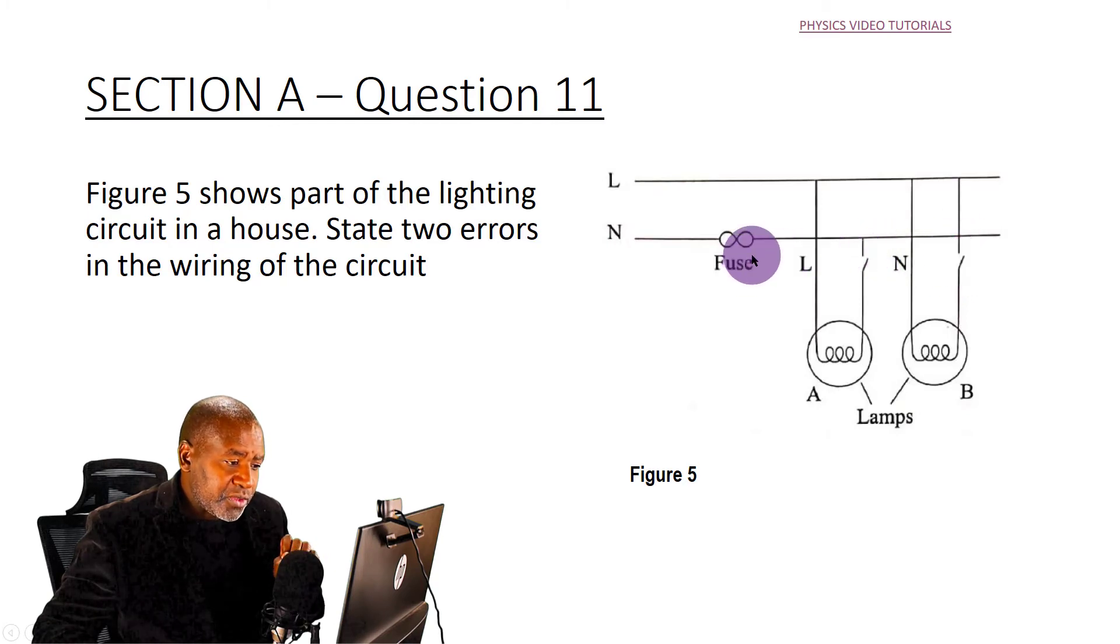Let's look at the fuse. The fuse, for both lamps, instead of being connected to the live wire, is connected to the neutral. So that is the second error.